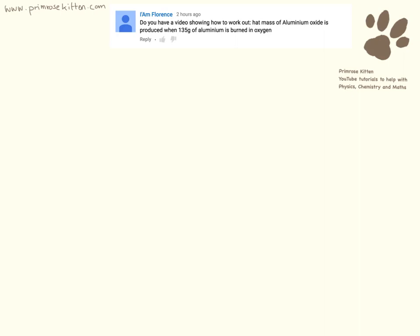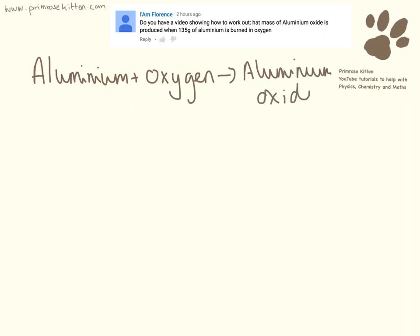So we're working out the mass of aluminium oxide that's produced when aluminium is burnt in oxygen. So the first thing I'm going to need is my word equation. Aluminium plus oxygen is aluminium oxide.